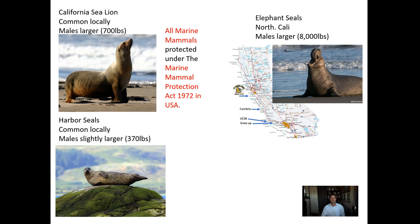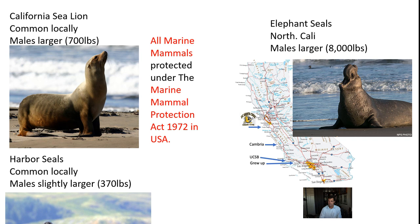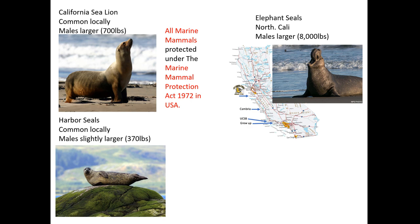We also have elephant seals, found more up in Northern California. Around the town of Cambria near San Luis Obispo there is a large beach where many elephant seals come ashore. The elephant seal is one of the largest marine mammals — the males are larger and can weigh up to 8,000 pounds.